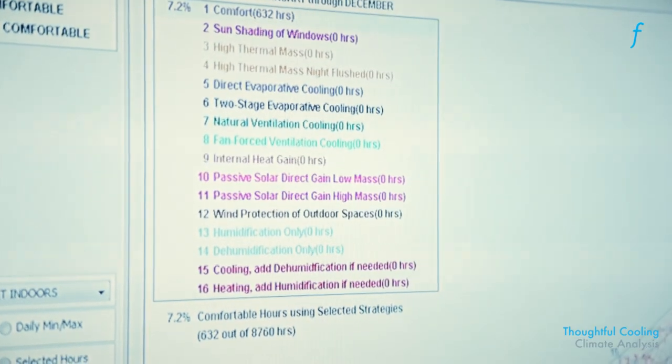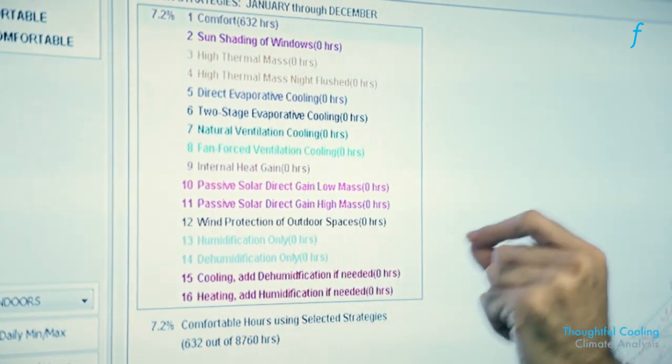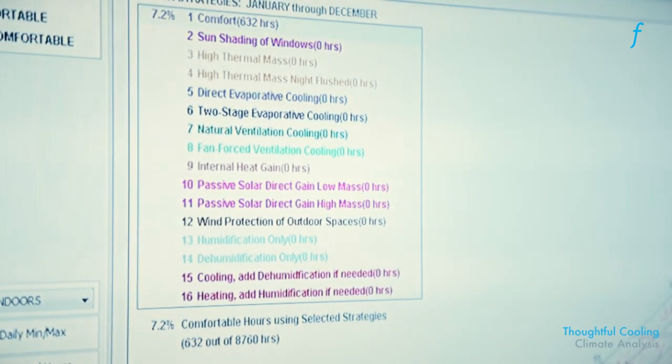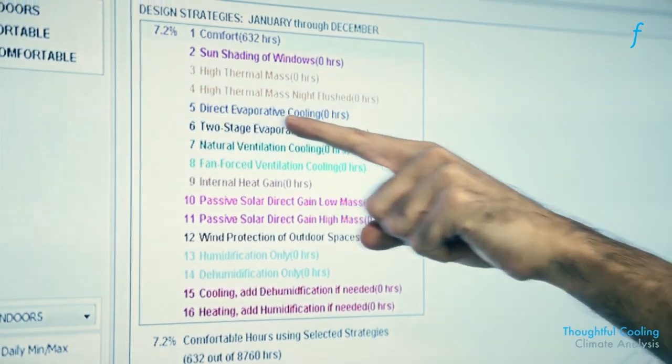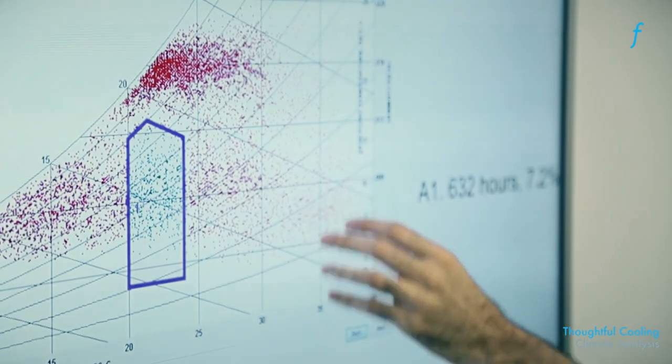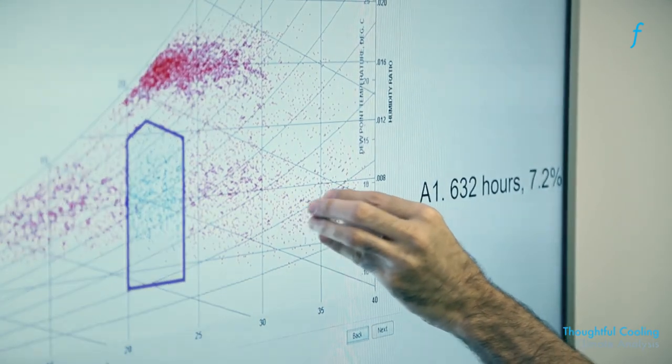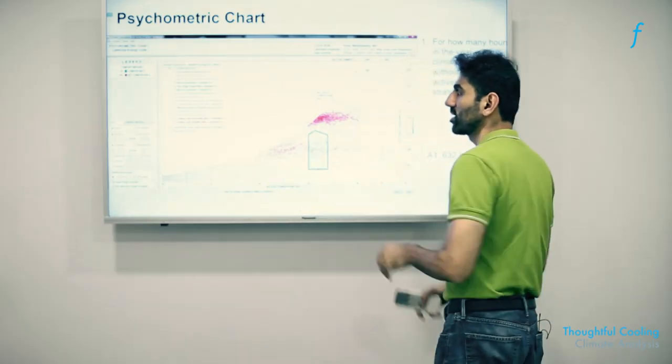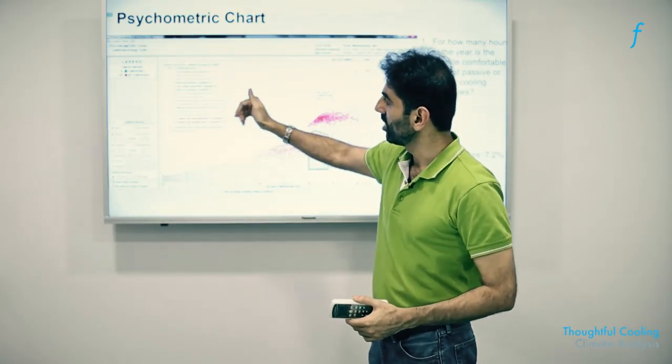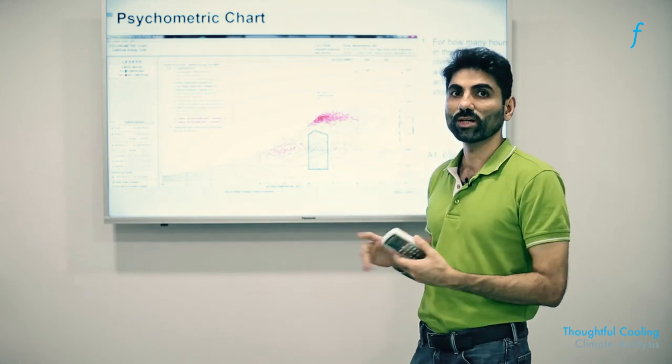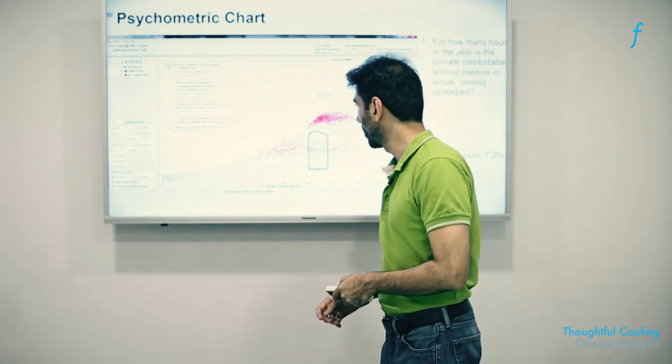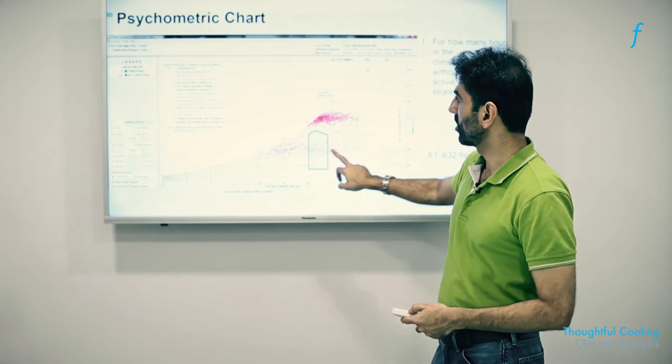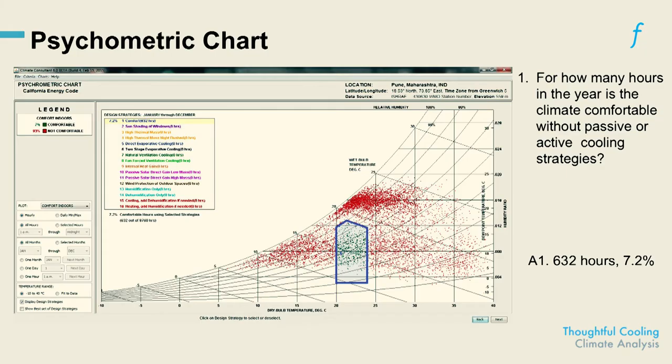And when you turn this feature on, it tells you how many hours will each of these strategies be useful for. So for example, it tells us direct evaporative cooling will most likely work here. What is the number of hours where I can use that process to take these dots and bring them into the center? This will give me a sense of how effective a certain strategy will be, which ones I should discard, which ones I should focus on, so on and so forth. And it also tells you the comfortable hours. So the comfortable hours in this case are 7.2 percent of the hours are already within the comfort zone in the city.